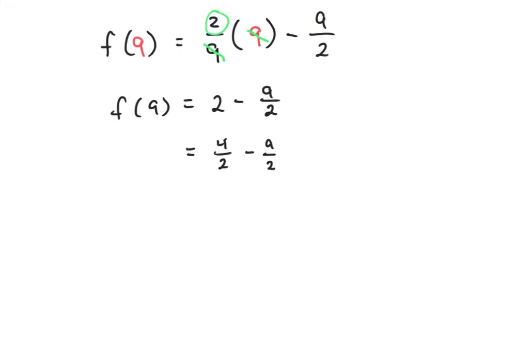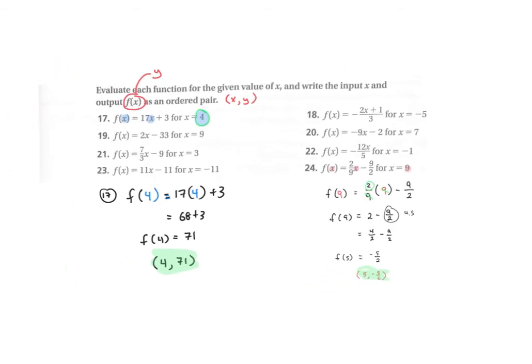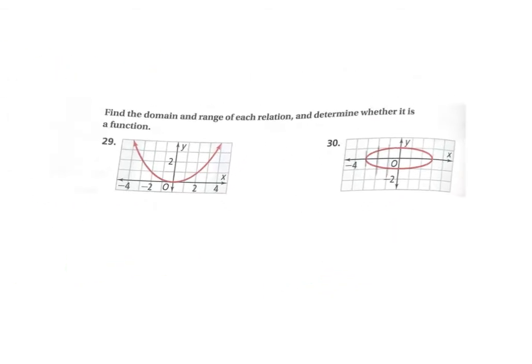Then we end up with negative 5 halves if you prefer fractions. If you prefer decimals, then you would have converted this to a 4.5, and then this would be a negative 2.5. So now how do we write it as the answer we're looking for? 9, negative 5 halves. And there we go, so here is our answer as an ordered pair.